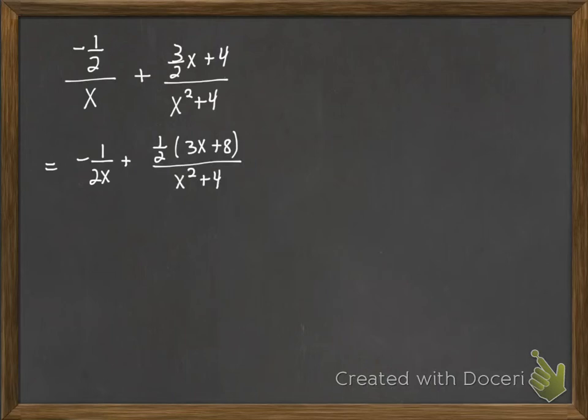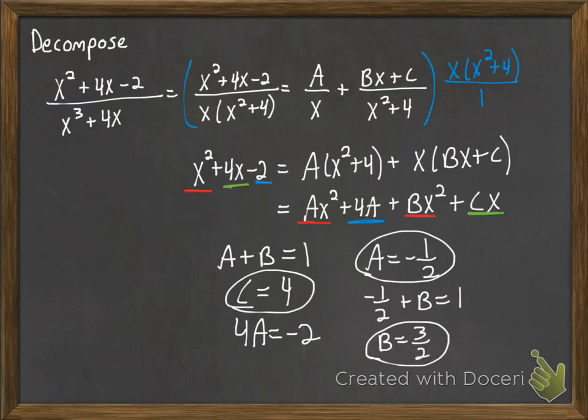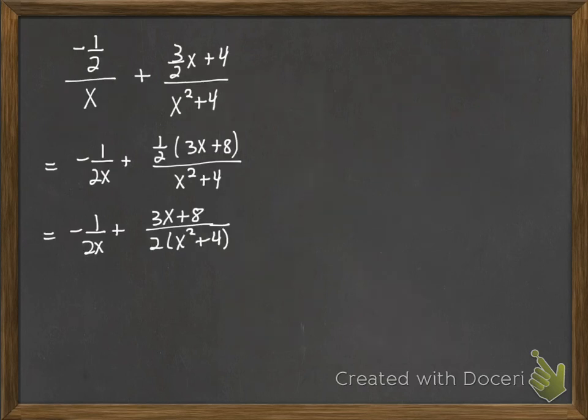And still that 1 half isn't quite where it belongs. The 2 should be in the bottom. So we get the answer negative 1 over 2x plus 3x plus 8 over 2 times x squared plus 4. And so now we have done our partial fraction decomposition. And again, here's the first page. We found our a, b, and c. And then there's our result. Negative 1 over 2x plus 3x plus 8 over 2 times x squared plus 4. Hopefully this helps you out. And good luck!